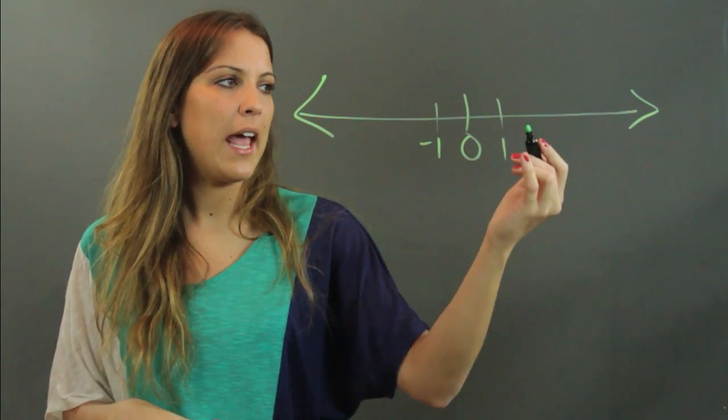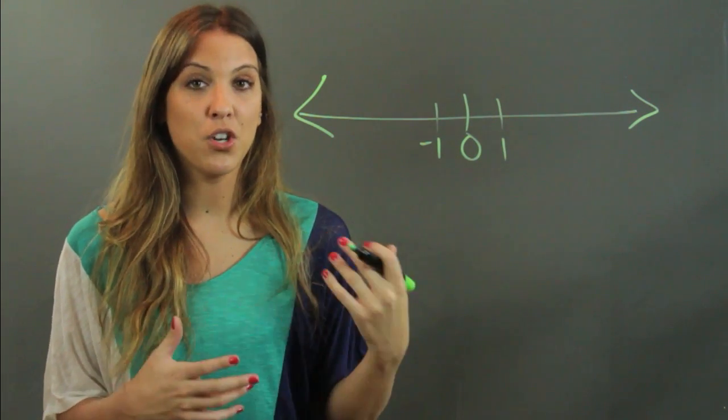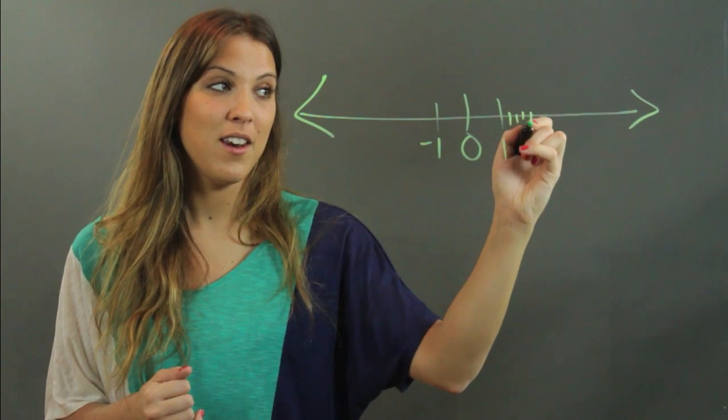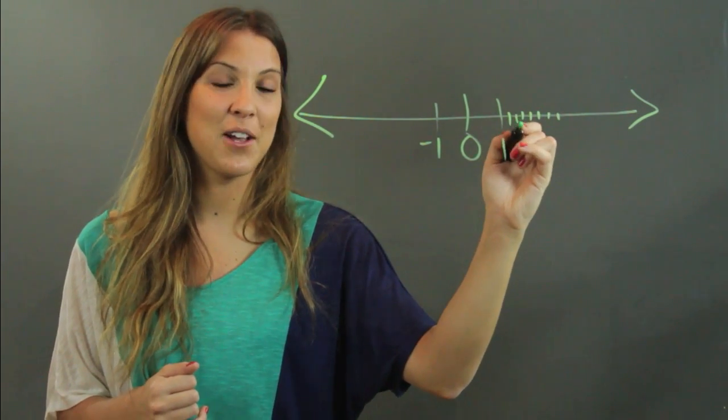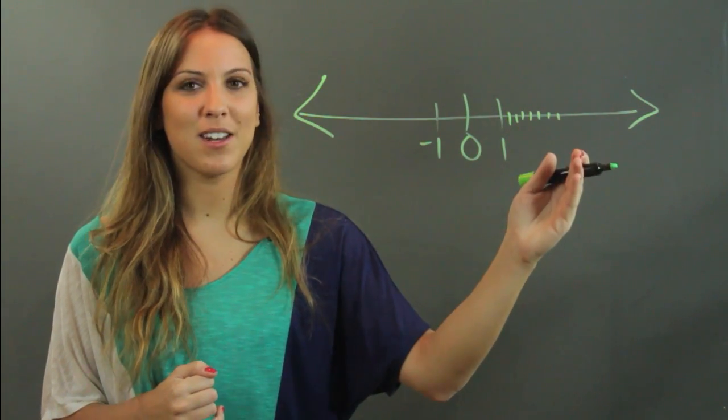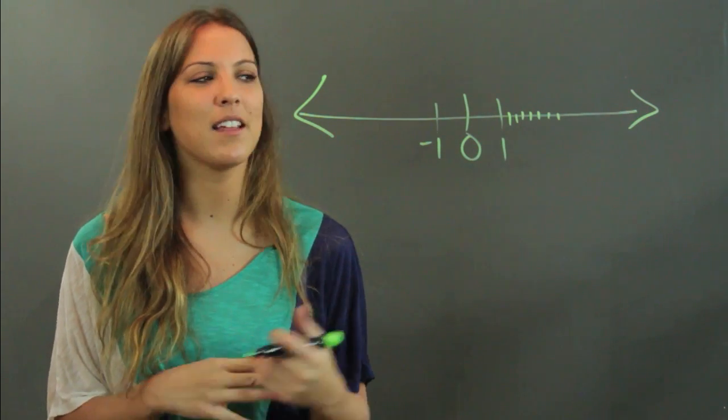If I've got the number one and you want to measure a certain number of hundredths, so let's say we want to do one and three hundredths, what you would literally have to do is draw 100 little notches and then go to the third one. So it's going to be very difficult and tedious, so I'm not going to draw a hundred lines here, but that's the way that you would represent it, which is why it is not represented on a number line like that.